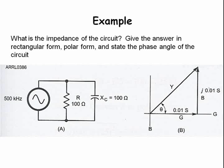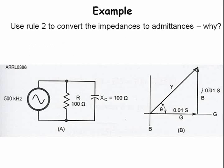What is the impedance of the circuit? Give the answer in rectangular form, polar form, and state the phase angle of the circuit. To solve this problem, we are going to convert impedances to admittance. Why? Because we can add admittances in parallel.